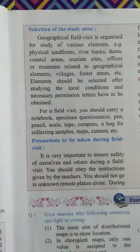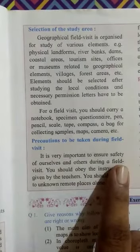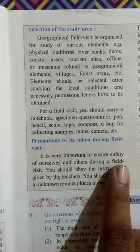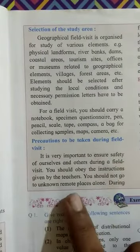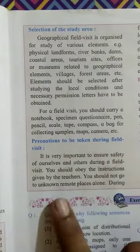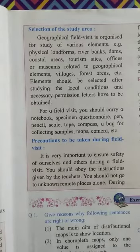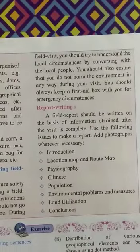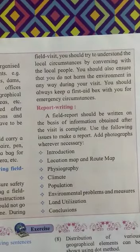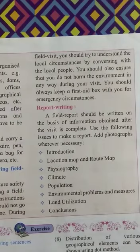Now you need to take some precautions during field visit. It is always important that you should ensure the safety of yourself and others too. You should obey the instructions given by your teacher. You should not go to an unknown remote place alone. You should always inform your teacher while going anywhere. During field visit, you should try to understand the local circumstance by conversing with local people and talking to them.